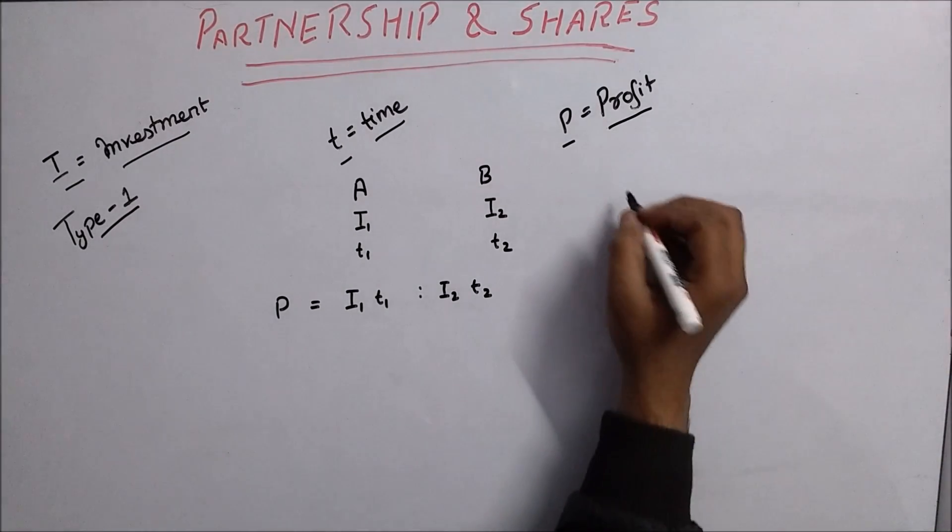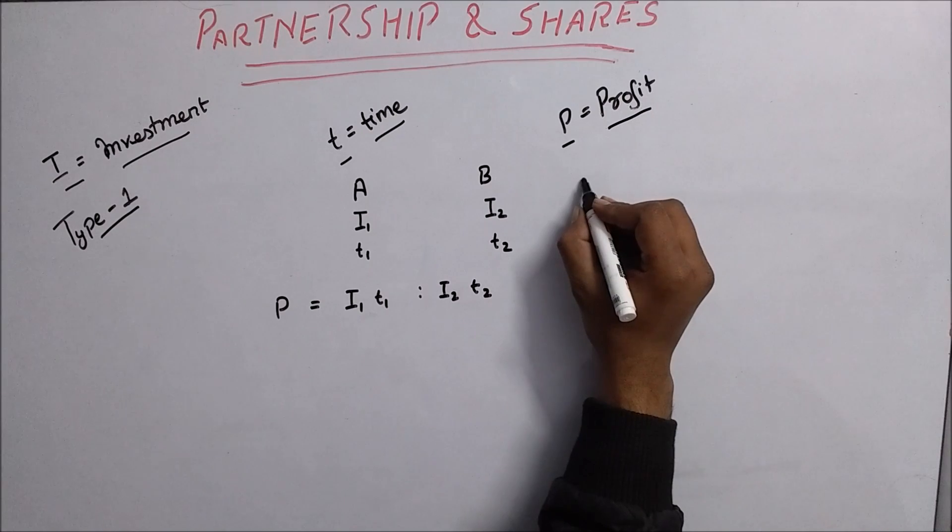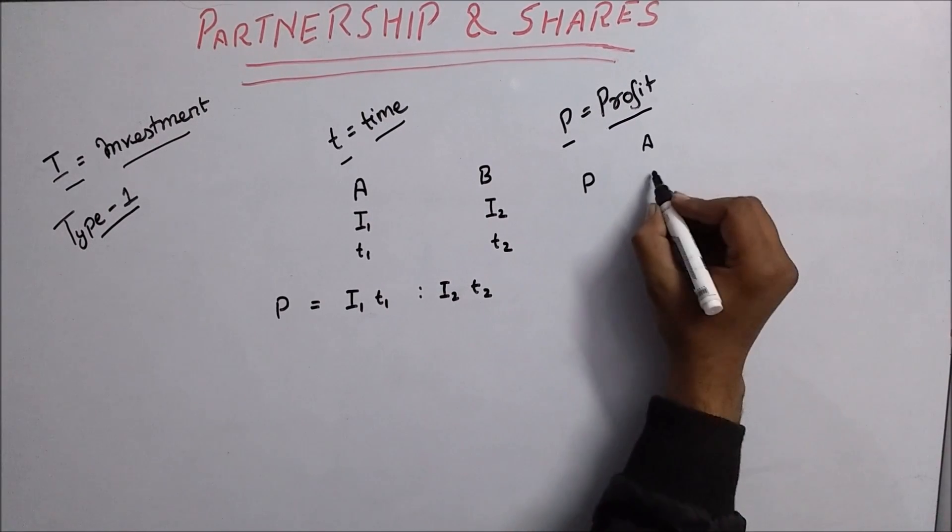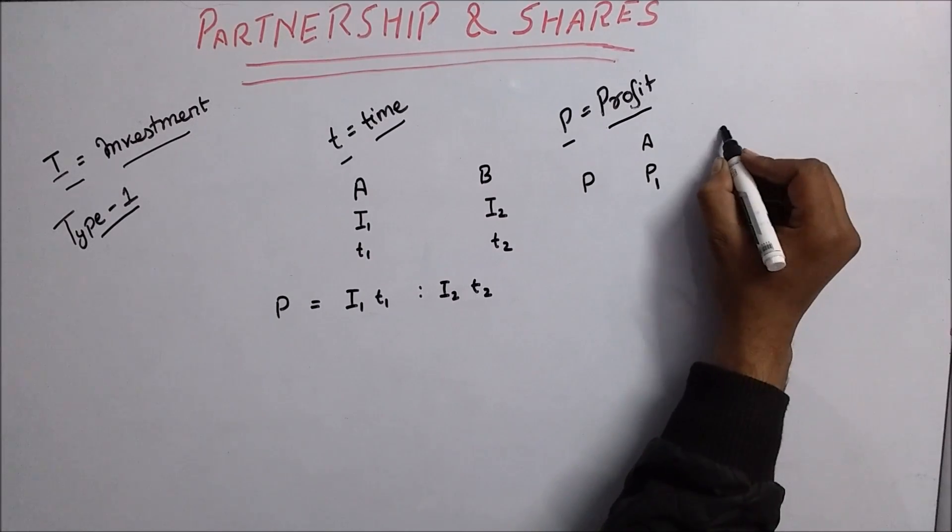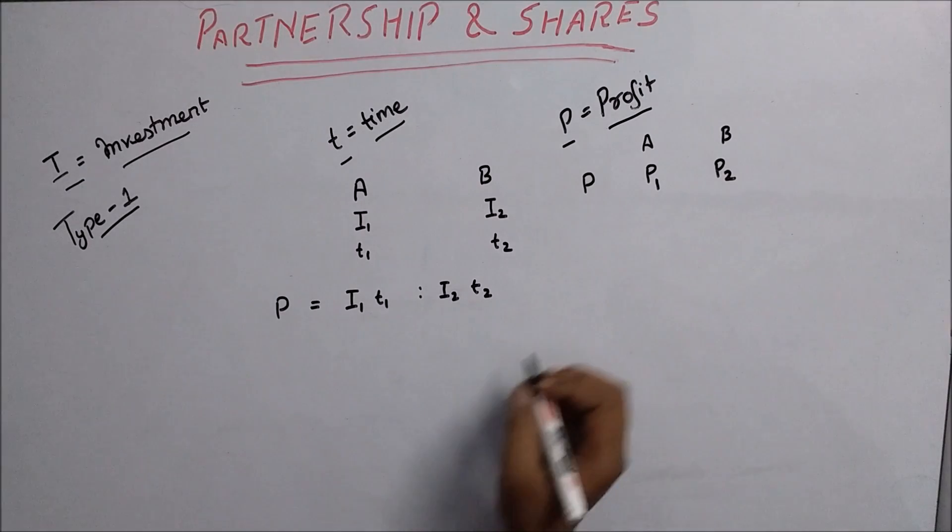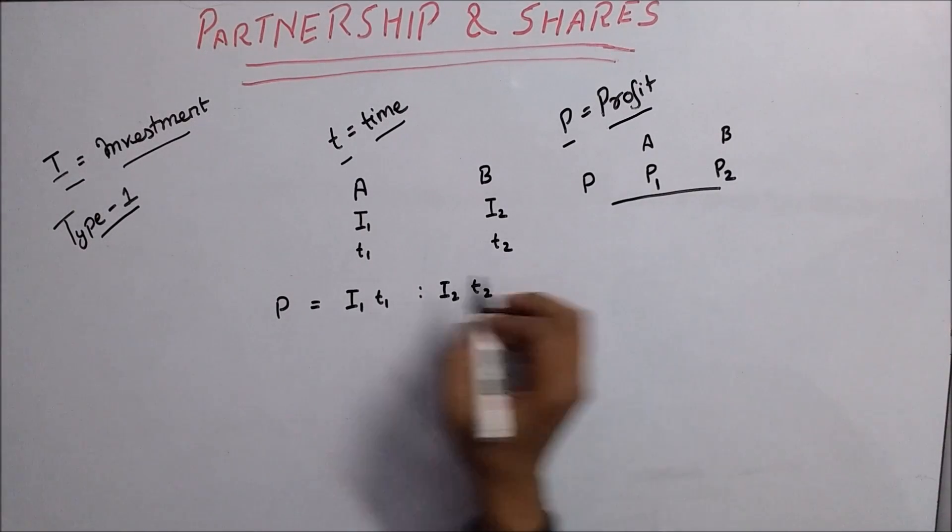Now if we need to calculate the profit ratio, then it will be I1×T1 ratio I2×T2.